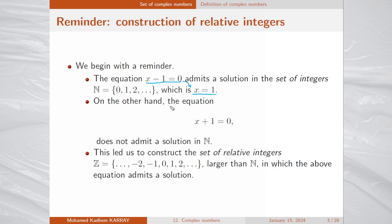On the other hand, the equation x plus 1 equals 0 does not admit a solution in N. This led us to construct a set denoted Z, which we call the set of relative integers. It comprises the set of integers and we add the negative numbers, so this equation admits the solution x equals minus 1.